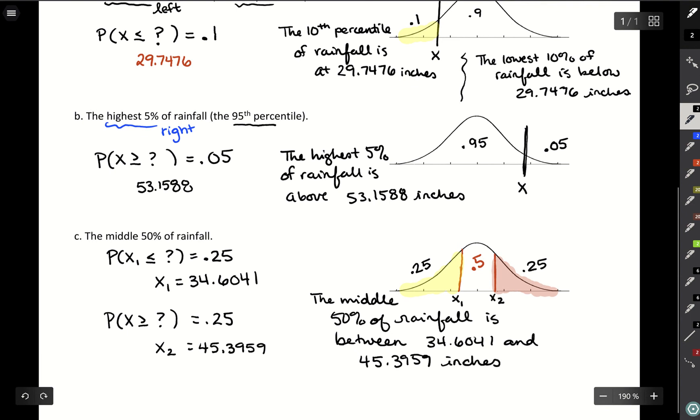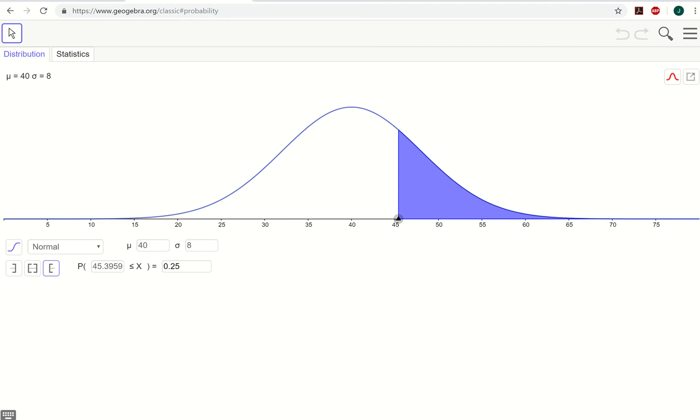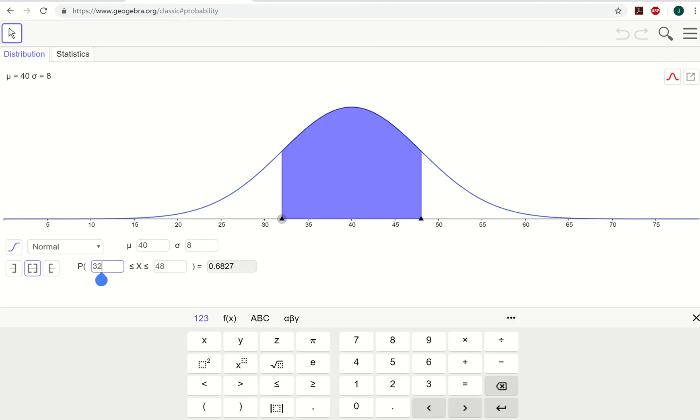And you can double check this works out in GeoGebra by editing your lower and upper bound. So say we did want area between, have a lower bound of 34.6041, upper bound of 45.3959, and it's nice and symmetric and it does give you that area of 50 percent in between those two values. But given an area between two values, you need to use the tails in order to find your cutoff values.